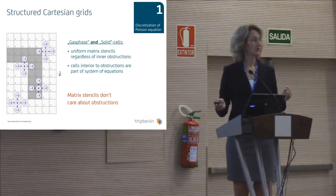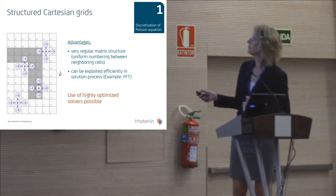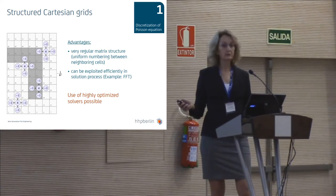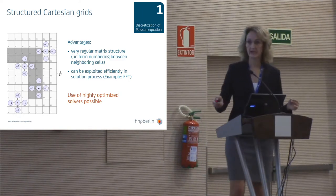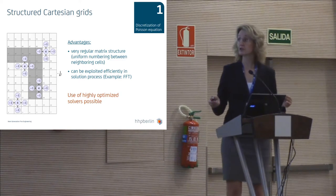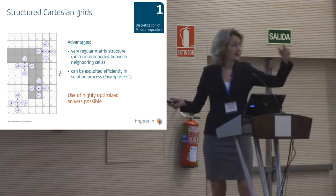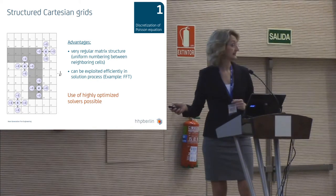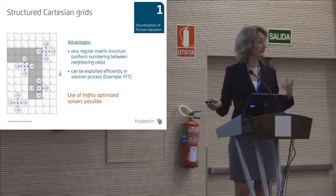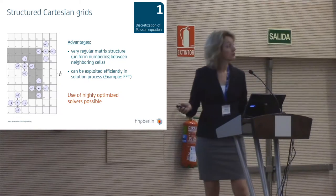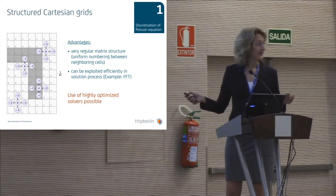So all cells interior to those solids are also part of the system of equations. This strategy has one big advantage: we have a very regular matrix structure. We have a linewise numbering of the grid, and for each single grid cell we know the numbers of all neighboring cells. This fact can be exploited very efficiently in the solution process, and it is in the FFT method.